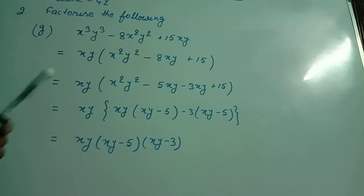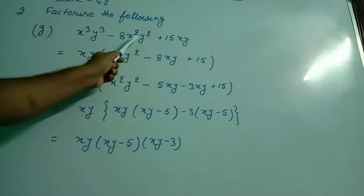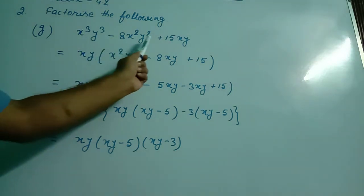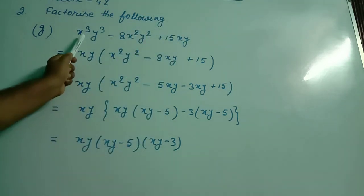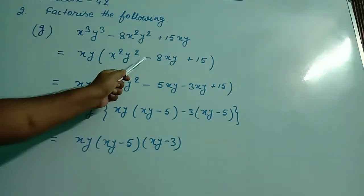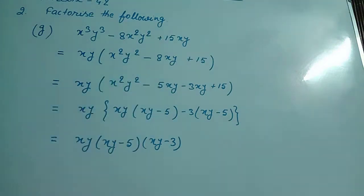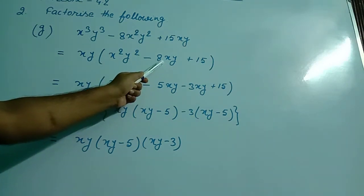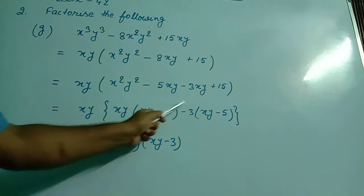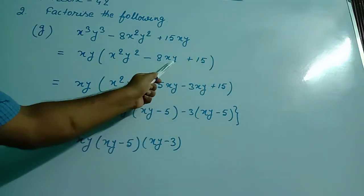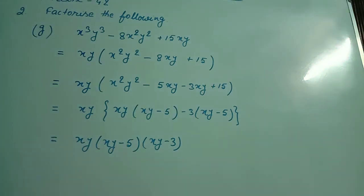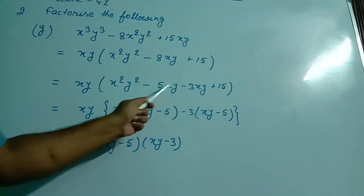In question number g, the equation is x³y³ - 8x²y² + 15xy. The first possibility is to take xy as common because xy belongs to all three terms. I took xy as common. Here x²y² is left, minus 8xy is left, and plus 15 is left. Now I splitted this in such a way that the sum of the two splitted terms equals minus 8xy and the product of the coefficients of xy equals 15. So minus 5xy minus 3xy equals minus 8xy, and 5 into 3 equals 15.